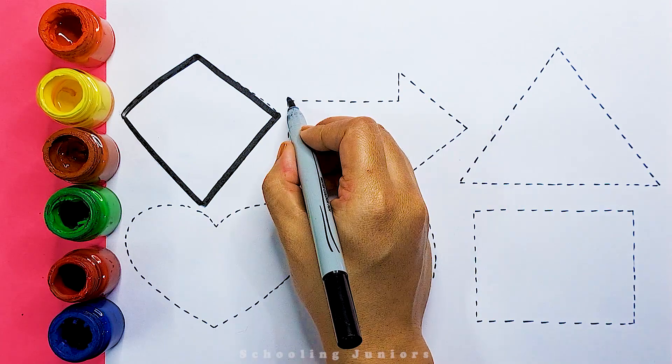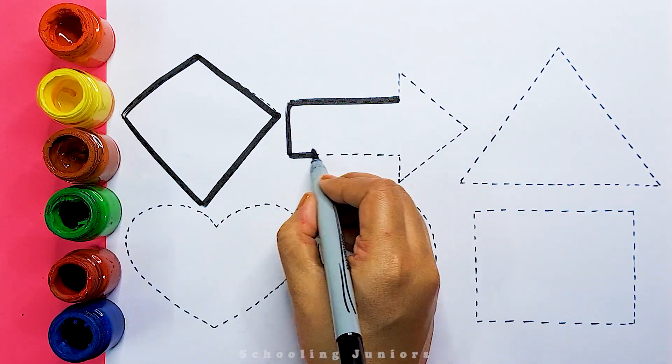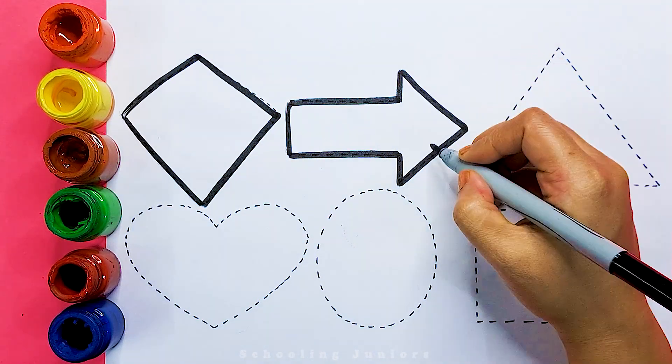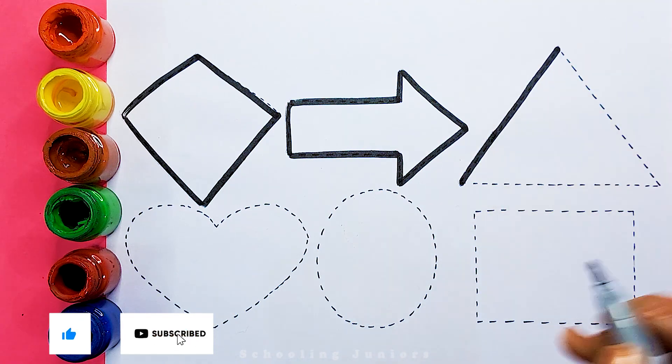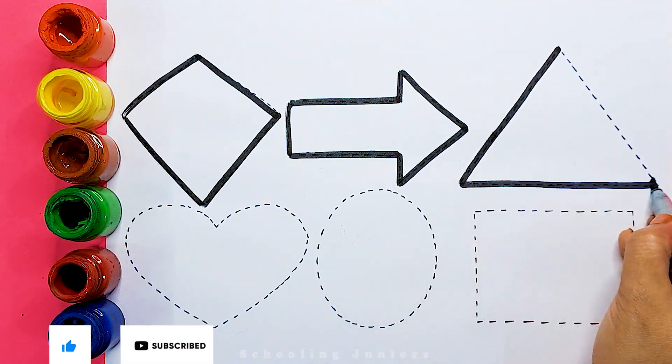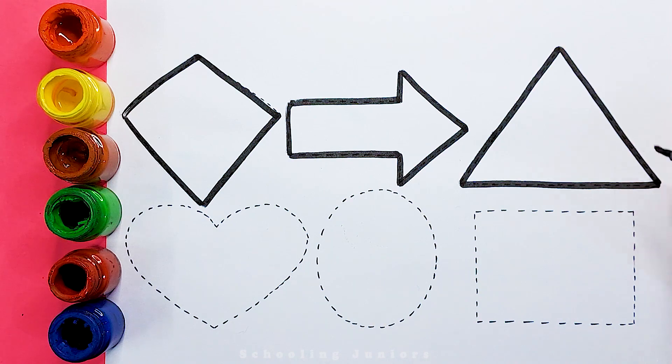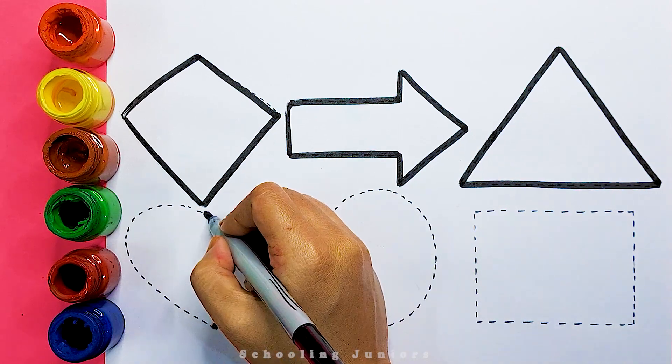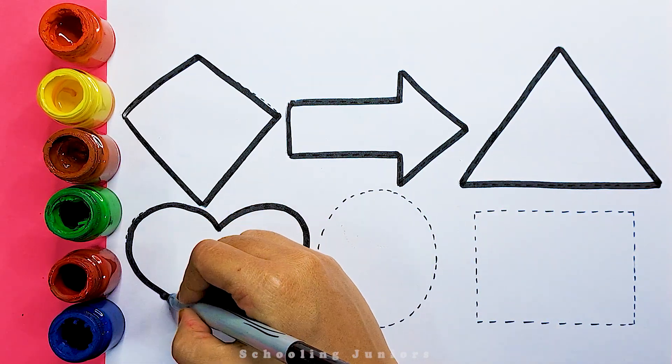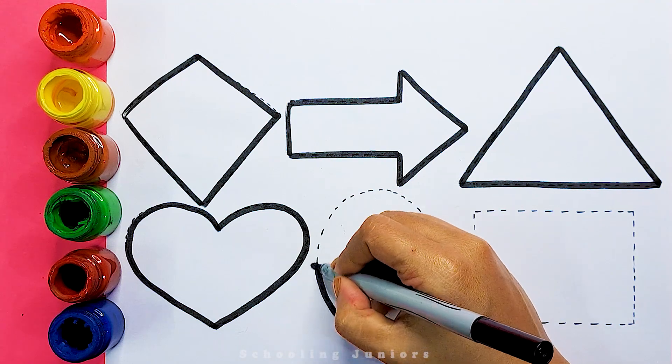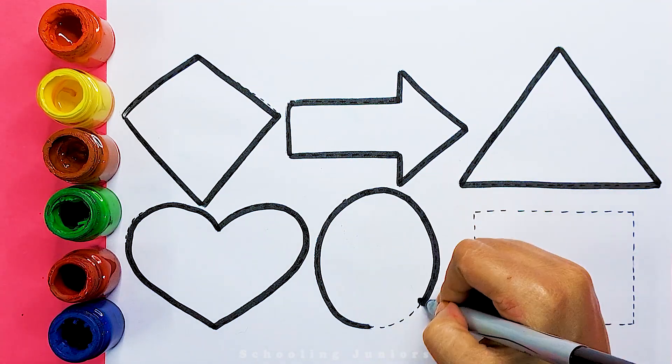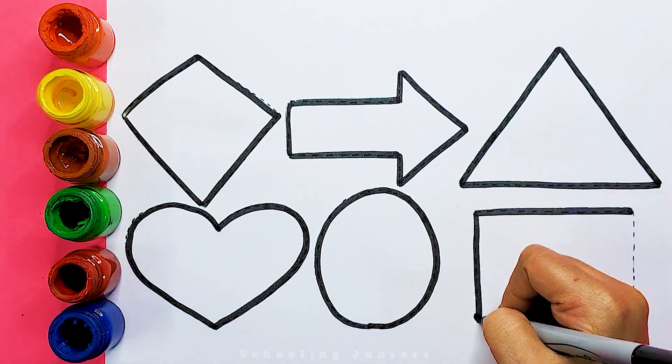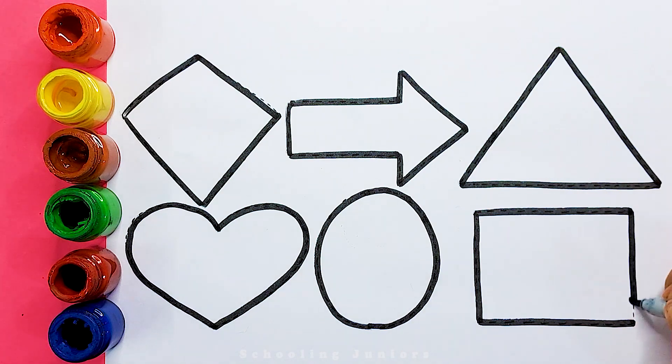Kites, arrow, triangle, heart, circle, square.